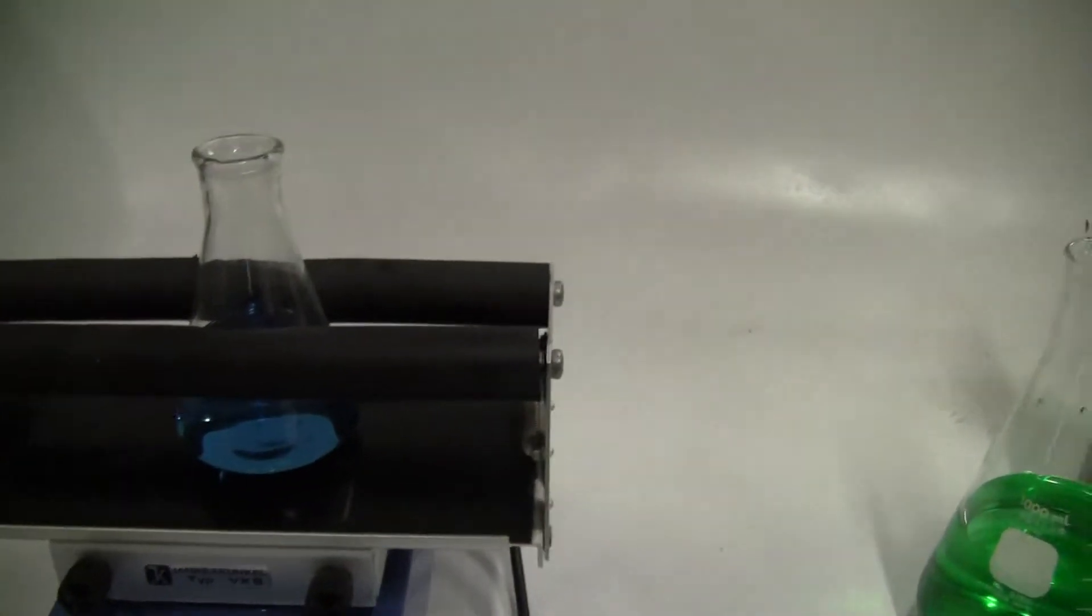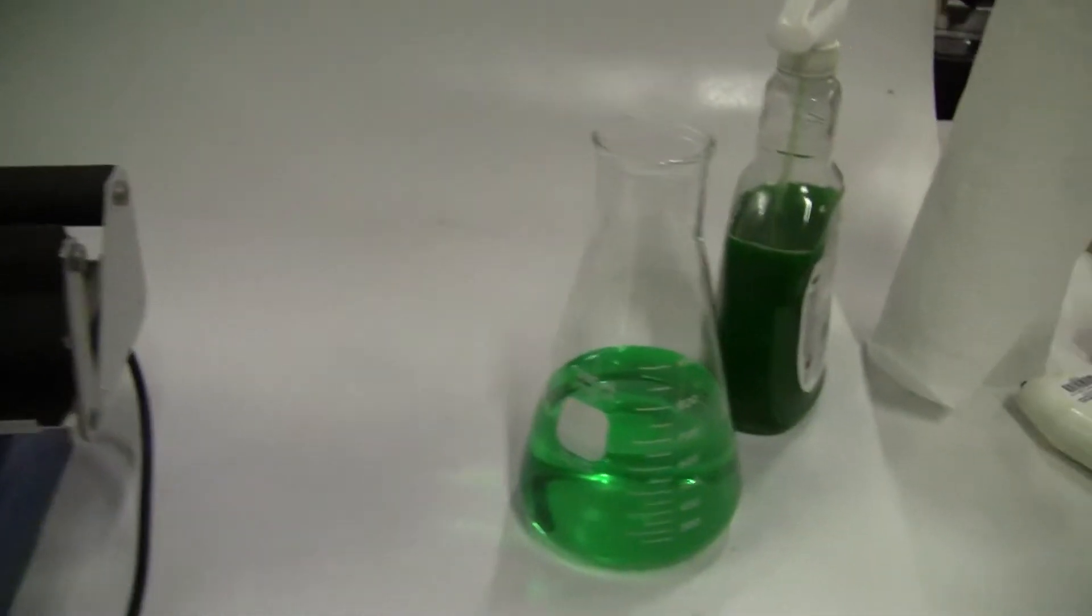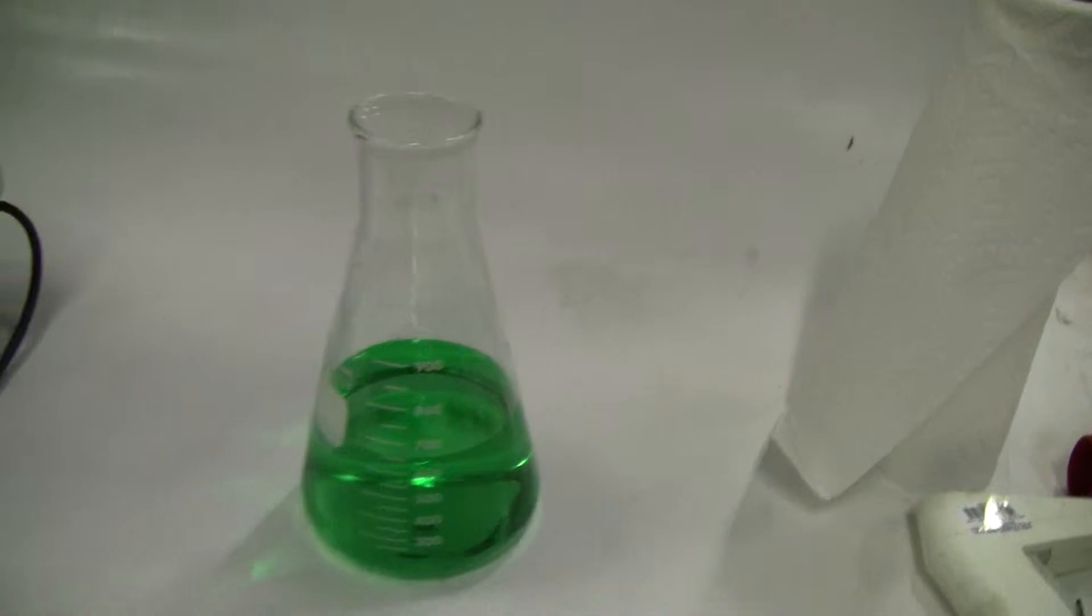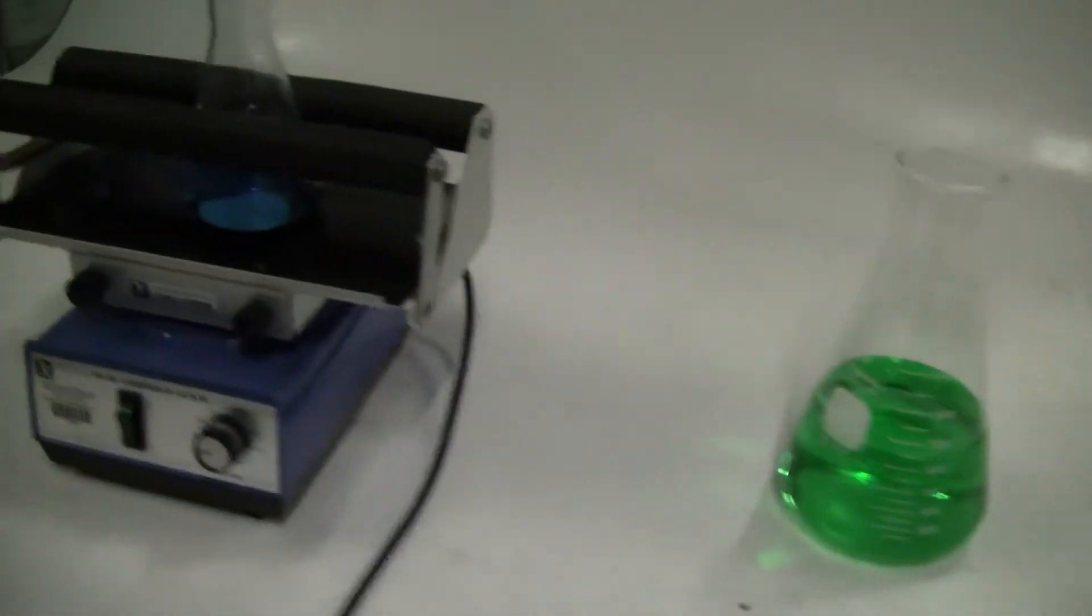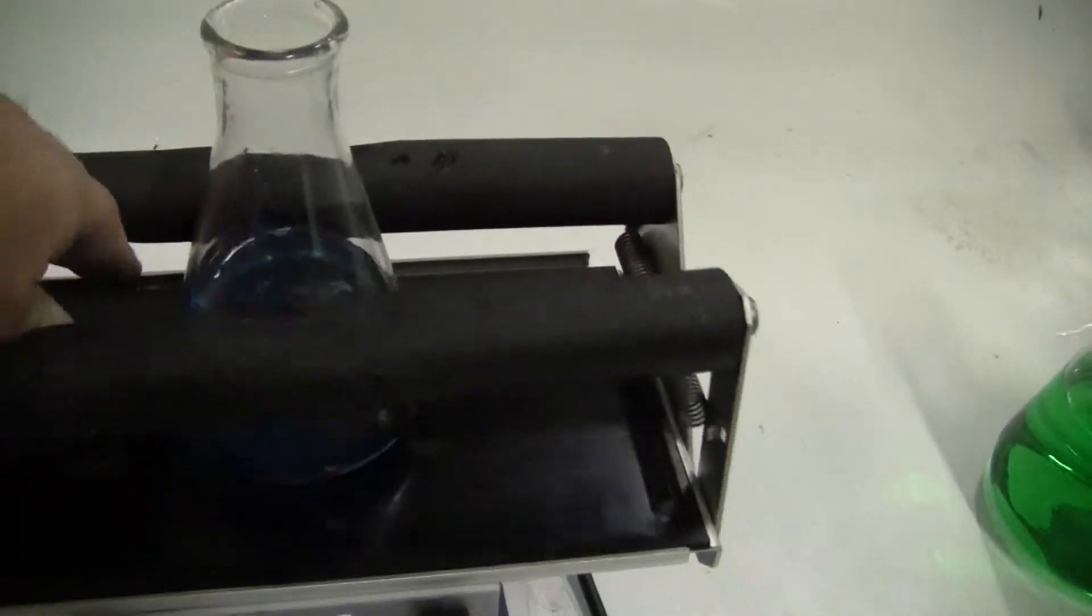We have it listed as holding a max of two 500 liter Erlenmeyer flasks, but as I'll show you in a minute, we have been able to run it with a 1 liter flask in there. It's got a universal holder, spring-loaded, so it's easy in and easy out.